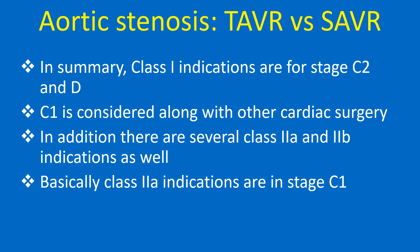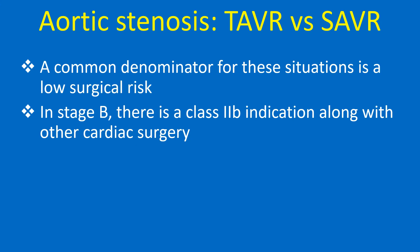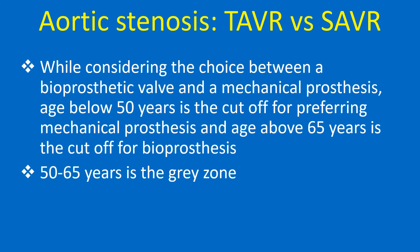In addition, there are several class 2A and 2B indications as well. Class 2A indications are in stage C1, and a common denominator for these situations is a low surgical risk. In stage B, there is a class 2B indication along with other cardiac surgery.